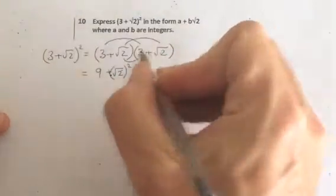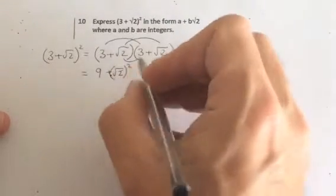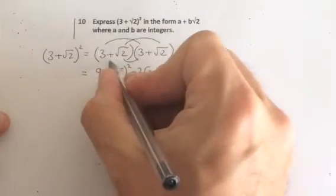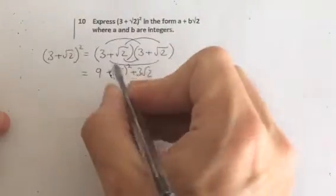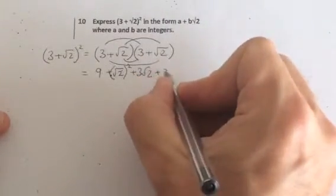OK, now let's do the nose. We've got 3 times √2. And then the mouth, another 3 times √2.